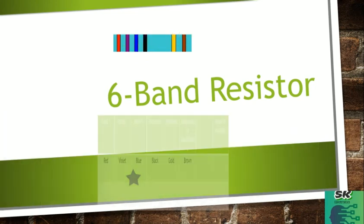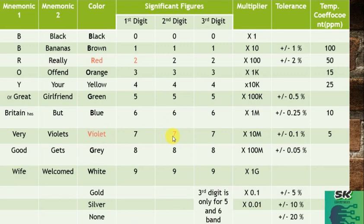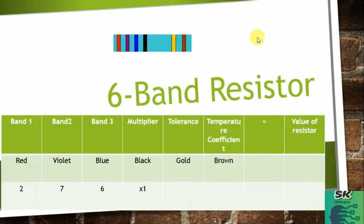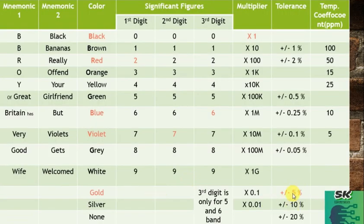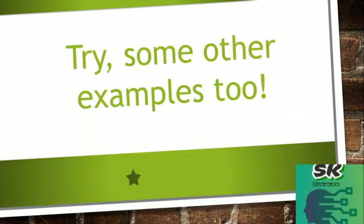This example is a six-band resistor with an additional temperature coefficient band. The colors are red, violet, blue, black, gold, and brown. Note: the tolerance band is always gold, not yellow — don't get confused. Red as the first digit is 2, violet as the second digit is 7, blue as the third digit is 6, black as the multiplier is ×1, gold for tolerance is ±5%, and brown for the temperature coefficient is 100 ppm. So our value is 276 Ω ±5% at 100 ppm.